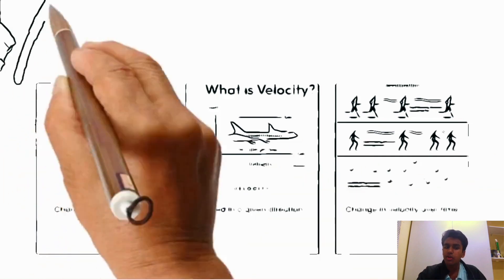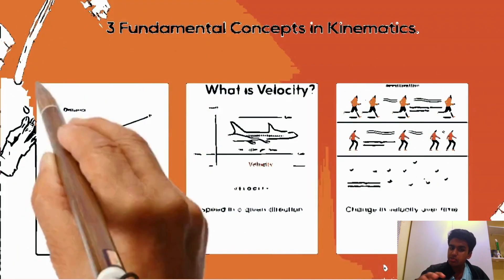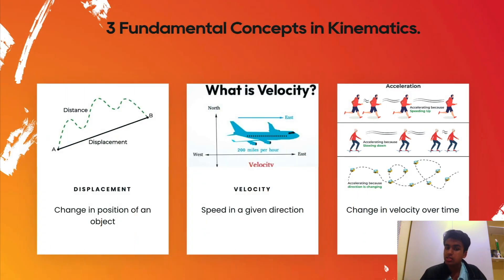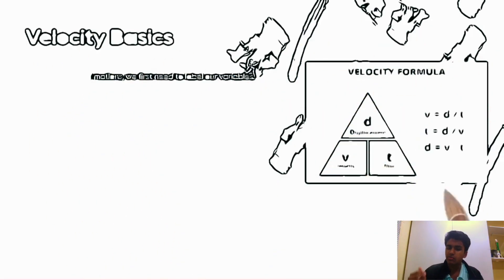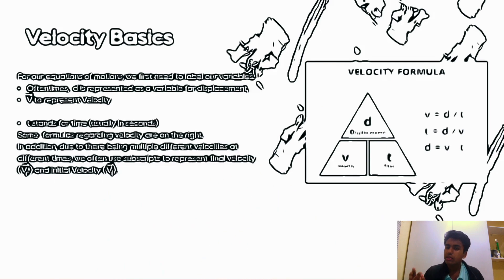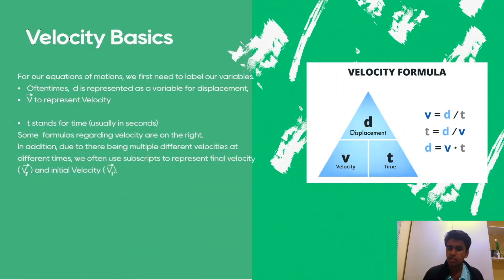There are three fundamental concepts of kinematics. The first one is displacement, which is the change in position for an object. The next one is velocity, which is speed in a given direction. And acceleration is basically the rate at which velocity is changing. If the acceleration is zero, then velocity is displacement over time.